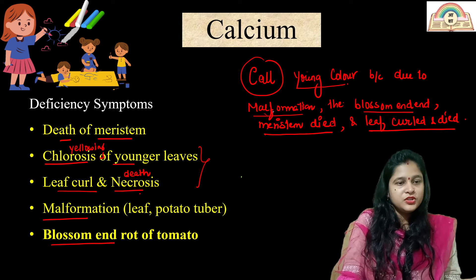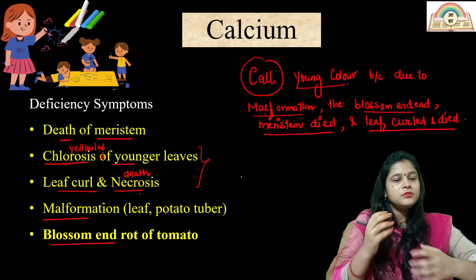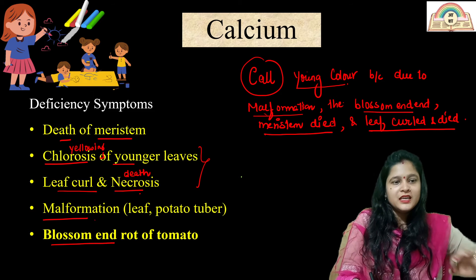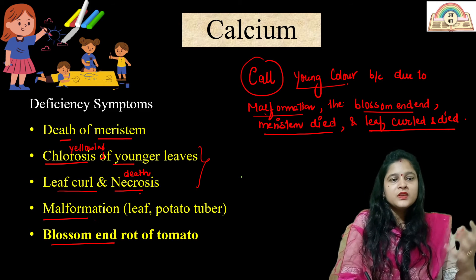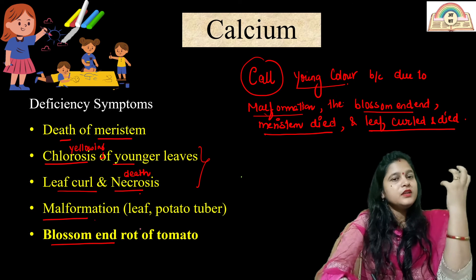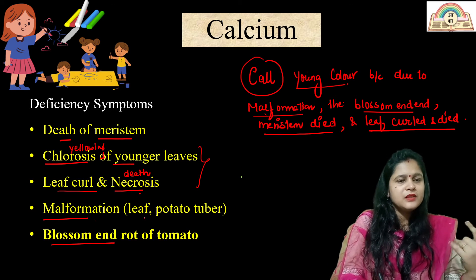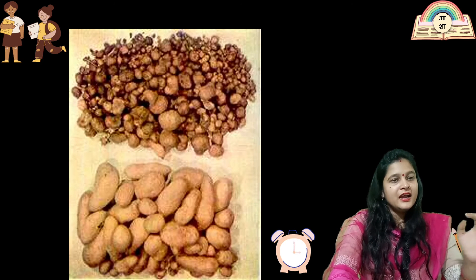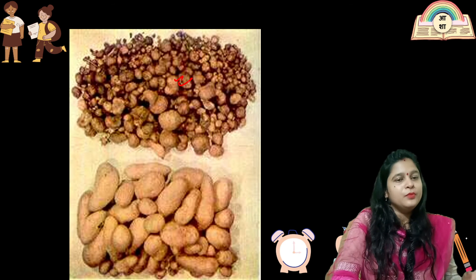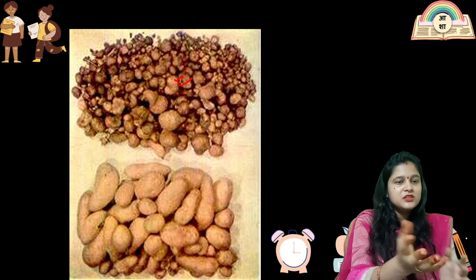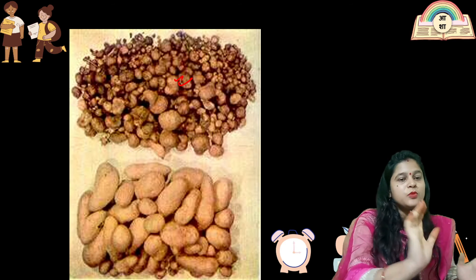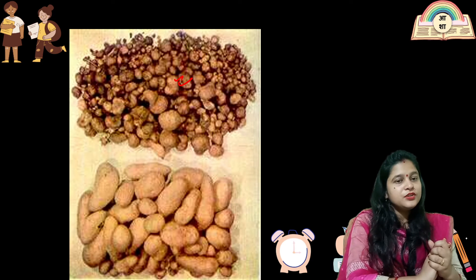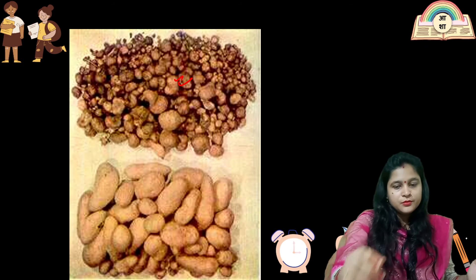Malformation means abnormal shapes are formed due to calcium deficiency — for example, malformation of leaves and potato tubers. You can see different abnormal-shaped leaves and abnormal-shaped potato tubers in the diagram. The upper ones show calcium deficiency and the lower ones are normal potato tubers with no calcium deficiency.